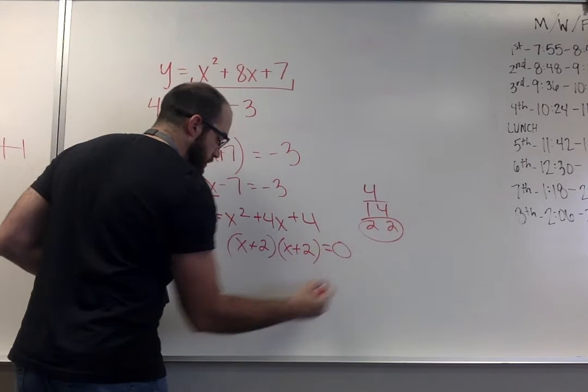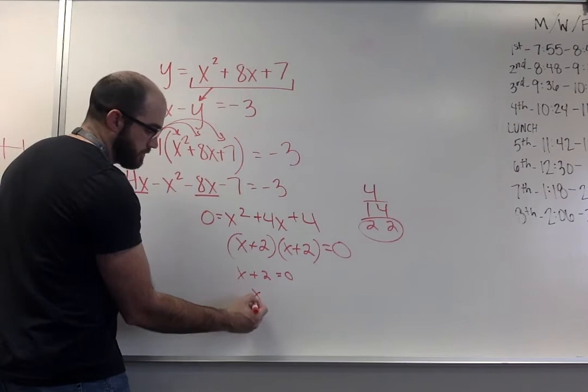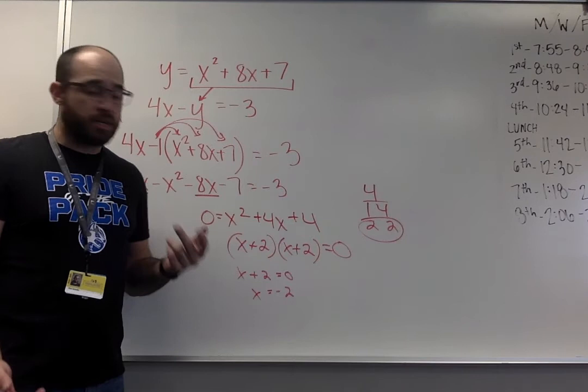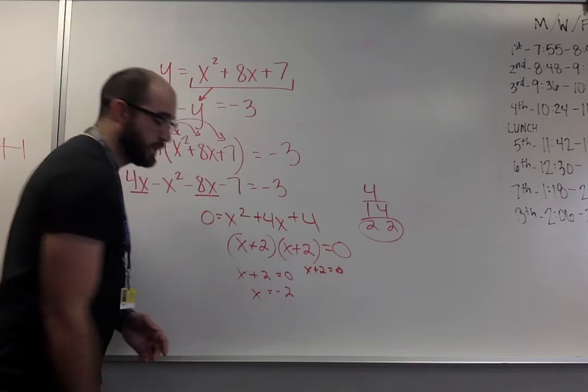So I'd have x plus 2, x plus 2 equals 0. Because these are both identical, I really need to do one equation. So I end up figuring out that x equals negative 2. I don't need to write it twice, because both of these would give me the same thing. If I did the same problem over here, it would also give me x equals negative 2, so there's no difference there.